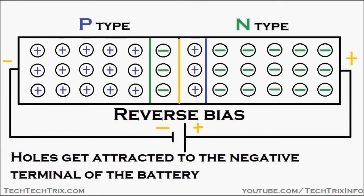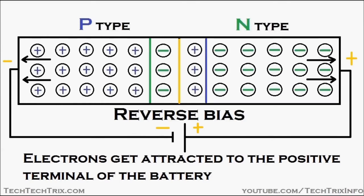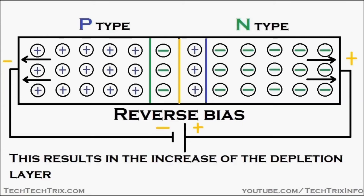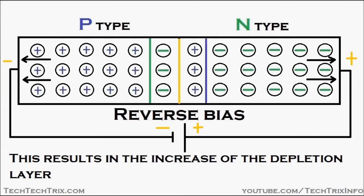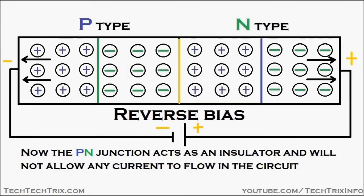So holes get attracted to the negative terminal of the battery, and electrons get attracted towards the positive terminal of the battery, as shown in the animation. This results in the increase of the depletion region — you can see the repulsion of the electrons and the holes happening against the depletion layer. This results in the increase of the depletion layer, as seen in the animation. The PN junction now acts as an insulator and will not allow any current to flow in the circuit — the depletion layer will not allow the flow of electrons or holes in that region.